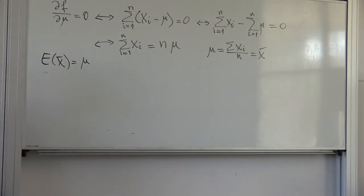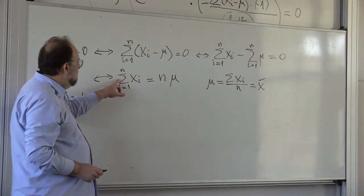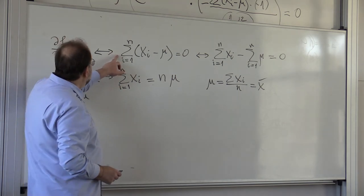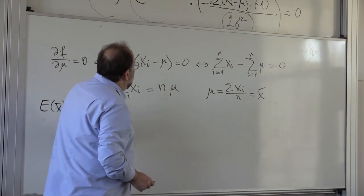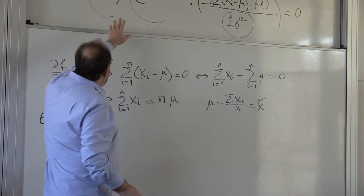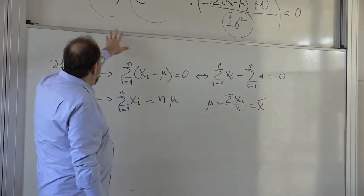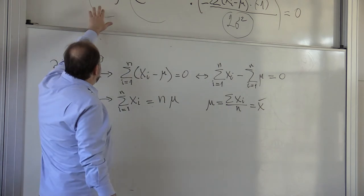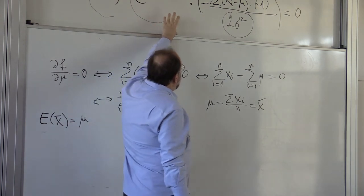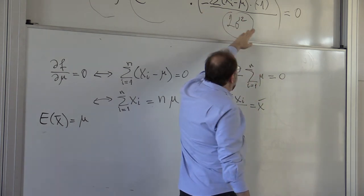Student question: how did you jump from that expression to the next one? The derivative expression equals 0 and it's a product. The product is 0 when at least one factor is 0. The constant prefactor can never be 0, and the exponential also can never be 0. So the only possibility is that the sum is equal to 0.